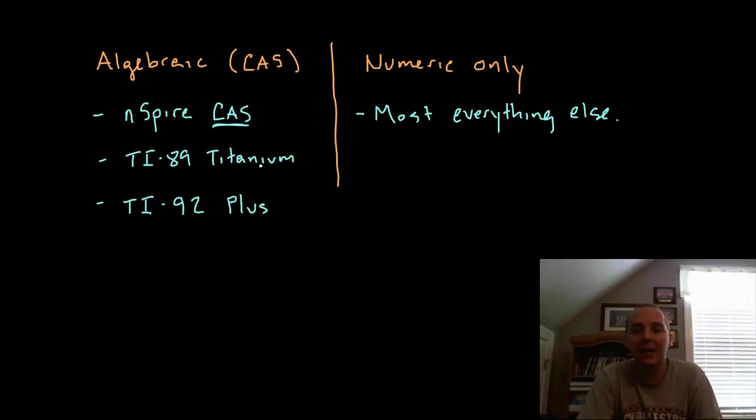The TI-89, the Titanium can do symbolic derivatives, as well as the TI-92 Plus, that's the one that has a QWERTY keyboard. So you have to be a little careful because not all of these can be used on like the SAT or some other standardized tests. Some instructors allow certain types of calculators but not other types of calculators, so you have to be a little careful.